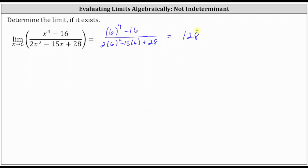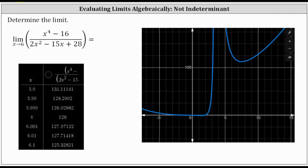Let's also verify this using a table of values as well as the graph of the function. Looking at the table, notice as we approach x equals six from values less than six, the function values are approaching 128. And as we approach six from values greater than six, the function values are approaching 128.